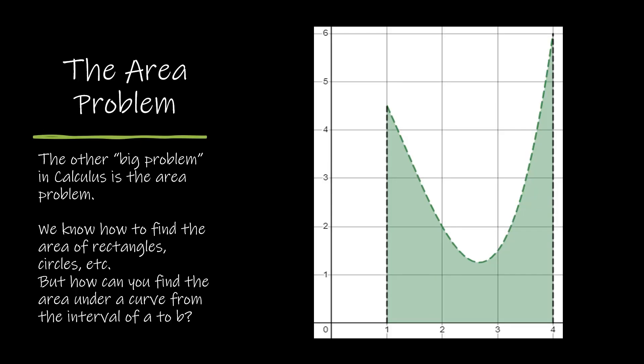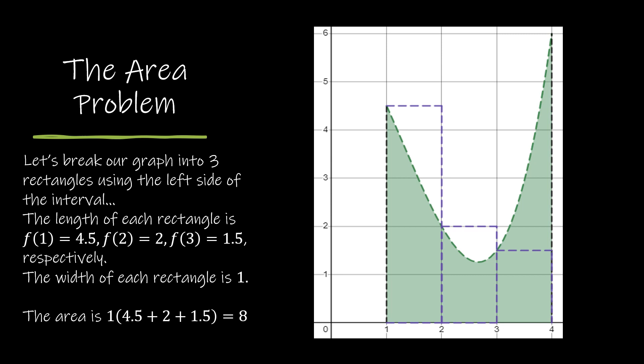The other big problem is the area problem. That problem says, you know how to find the area of a rectangle or a triangle or a trapezoid, but how do you find the area of this figure? How can we do that on an interval from A to B? Just as we did in the tangent line problem, we took something that we knew how to do and got closer and closer to the point. Here's something we know how to do: we have three rectangles.